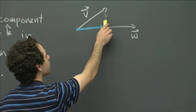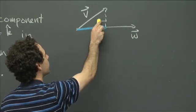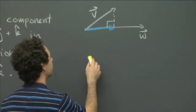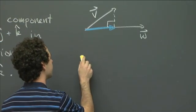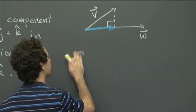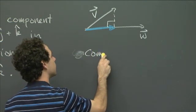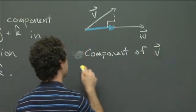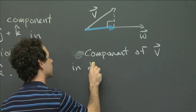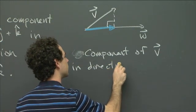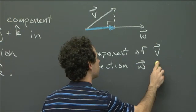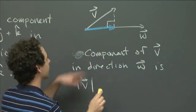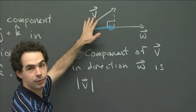And so we can see, since this is going to be a right triangle here, we can see that this vector has length that's just given by the length of v. So the component of v in direction w is just the length of v, right? That's the length of the hypotenuse times the cosine of the angle between them.